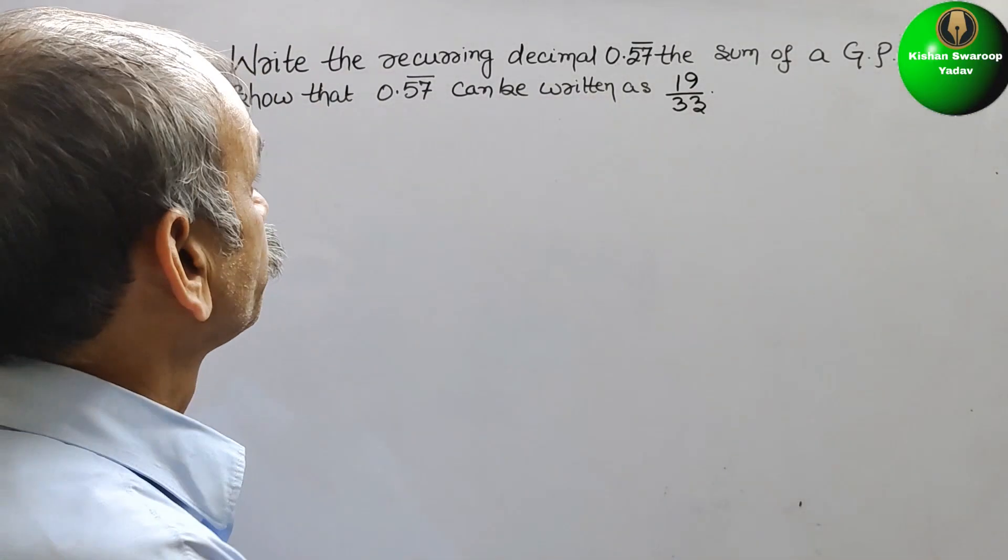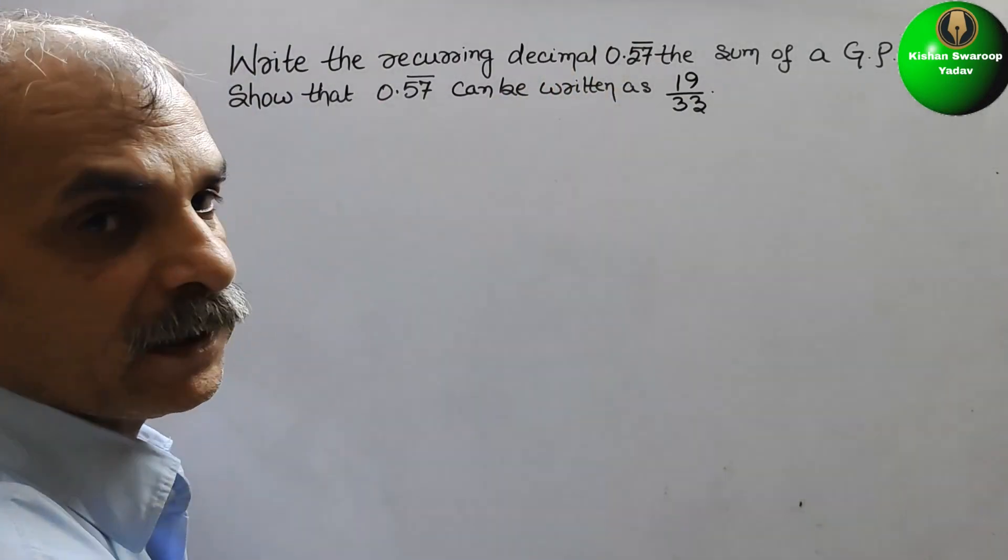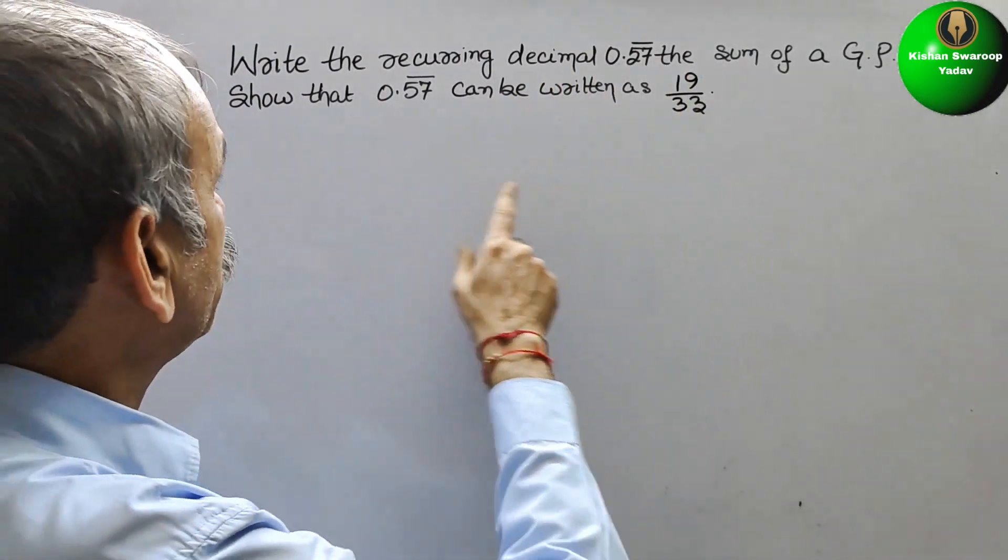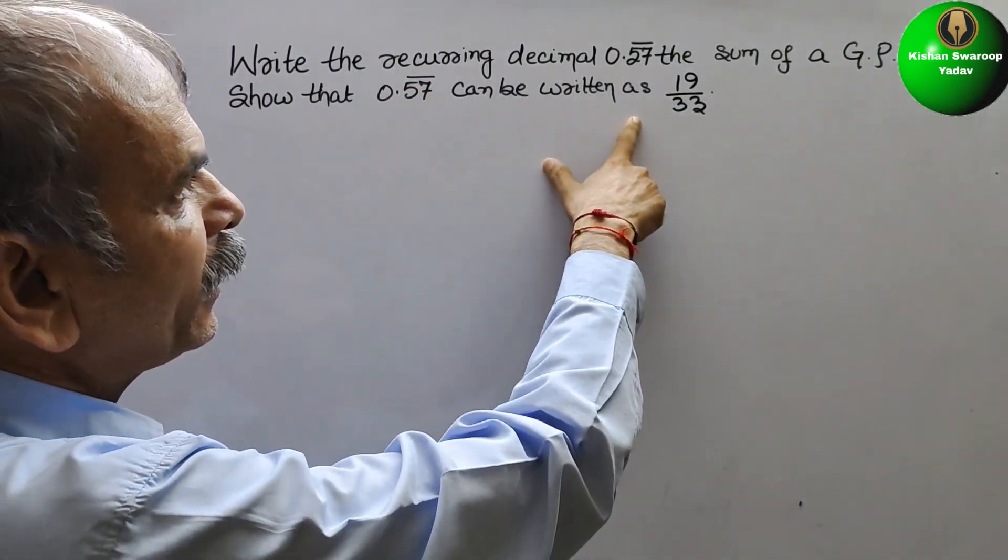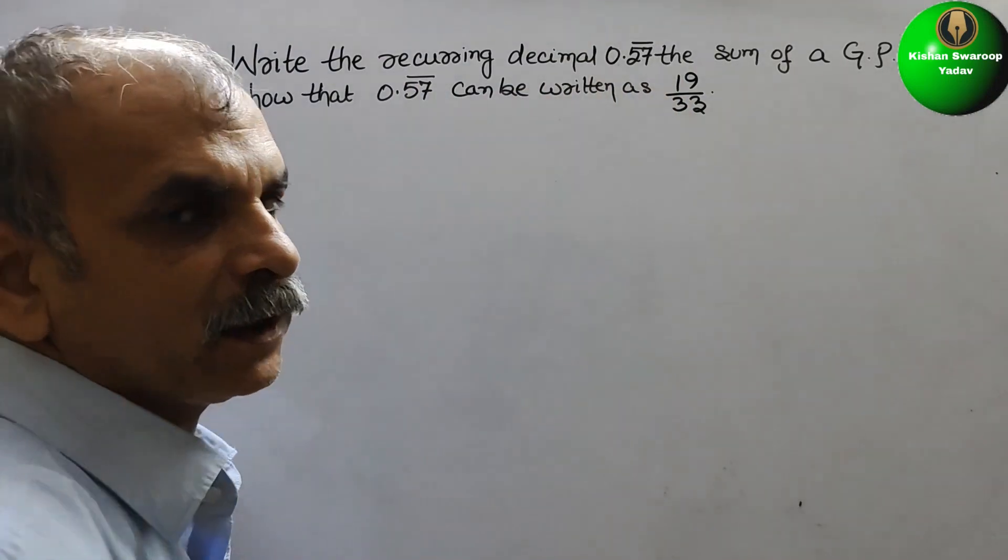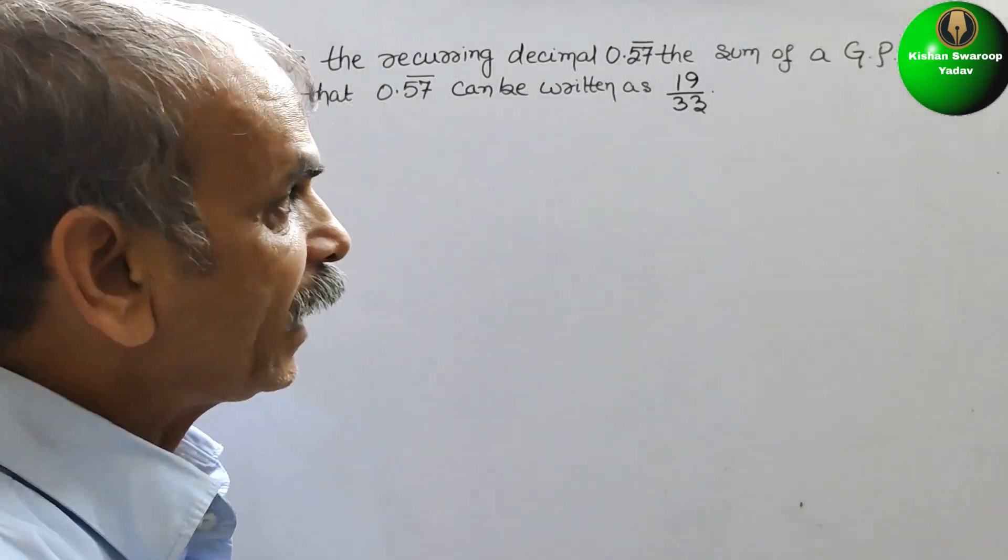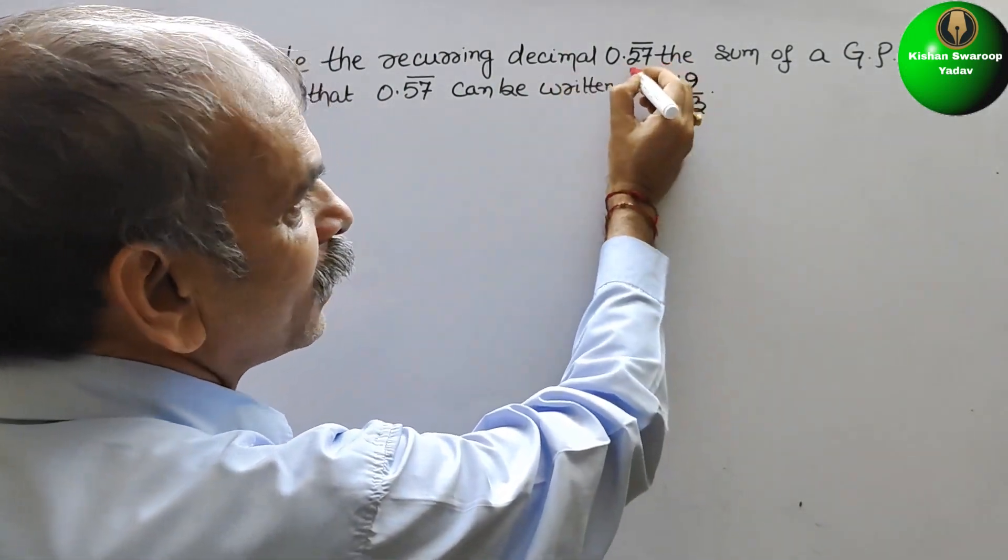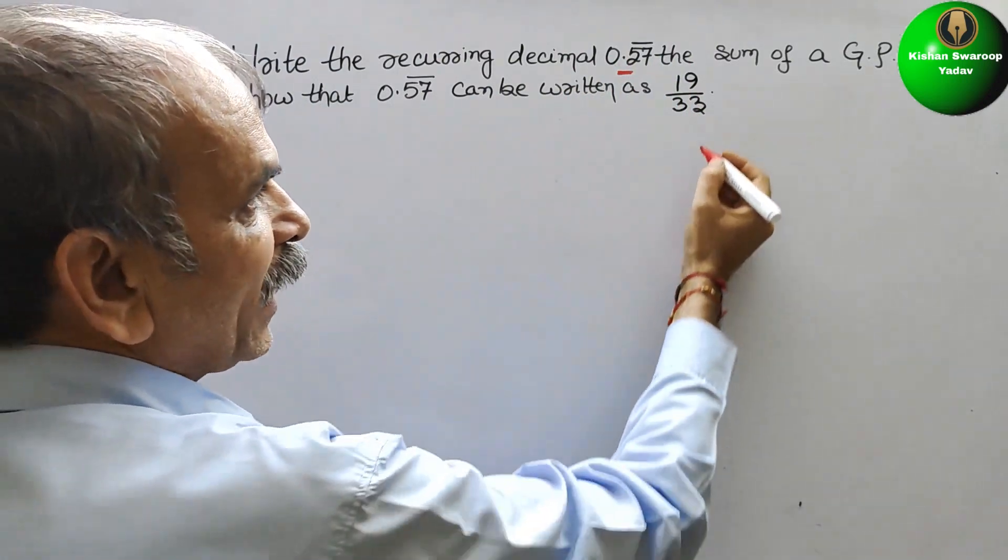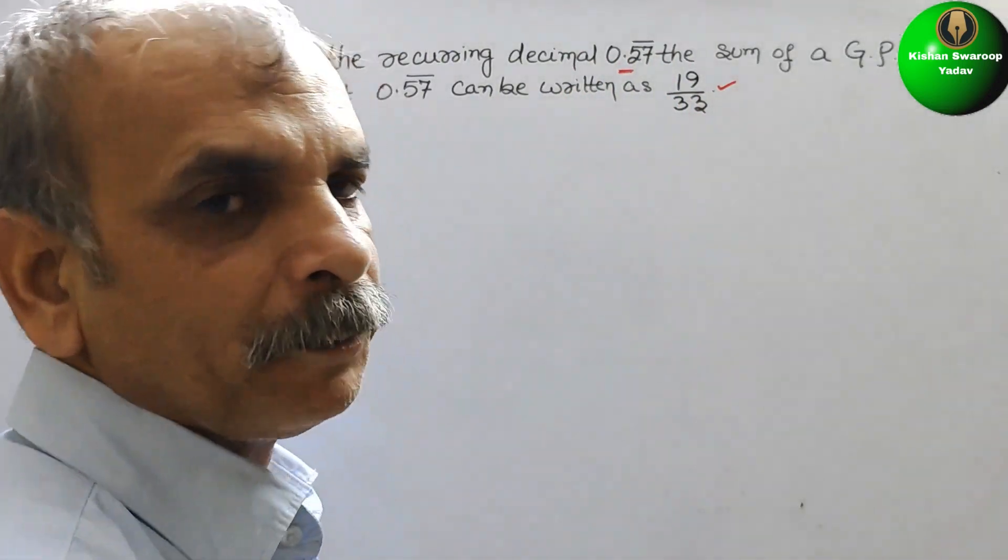Your question is: write the recurring decimal 0.57 as the sum of a GP and show that 0.57 bar can be written as 19 by 33. What does it mean? It means that if you sum up the recurring decimal, you will get this. But we have to write it in GP form.